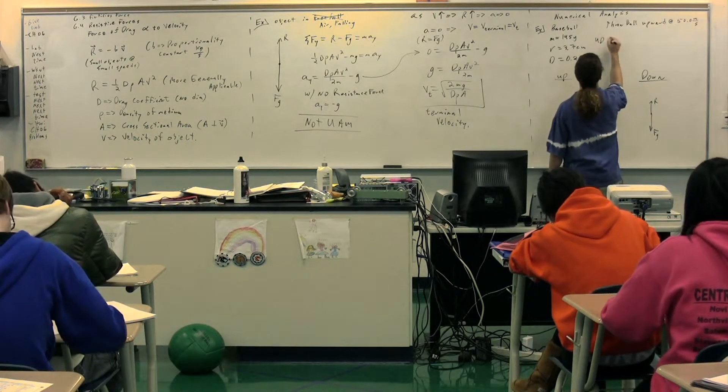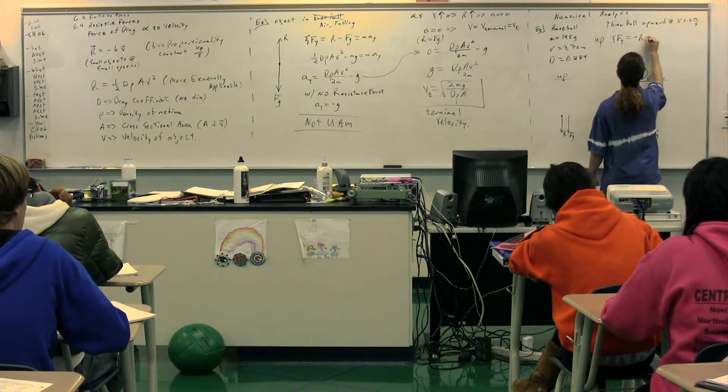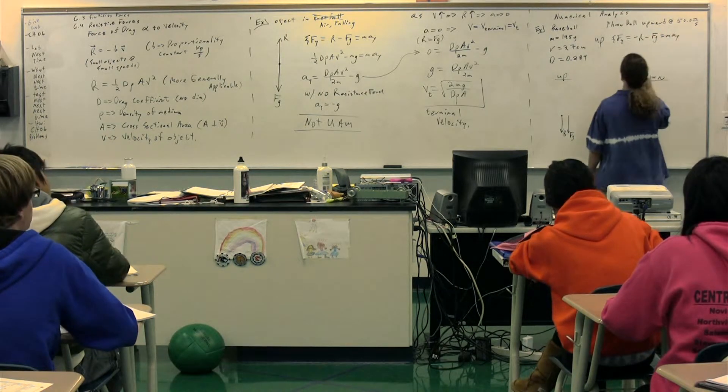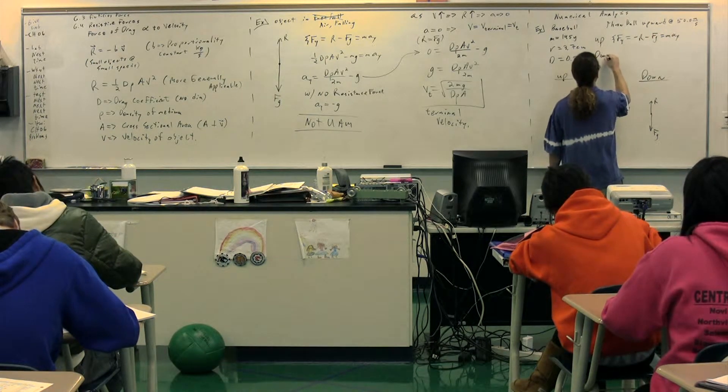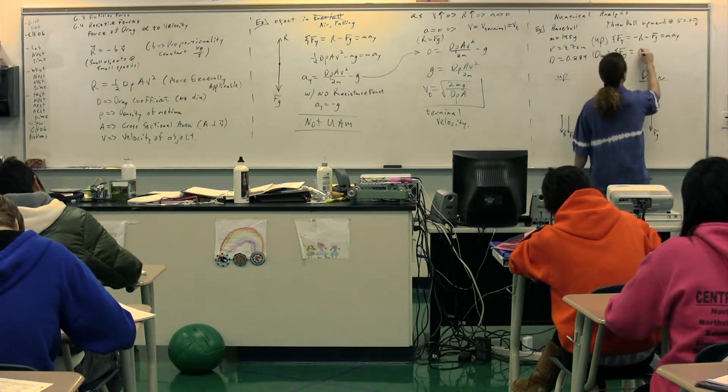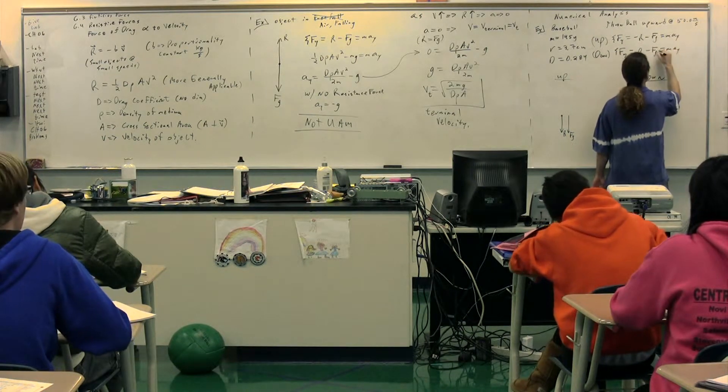The free body diagram actually changes depending on whether the object is moving up or down because the direction of the velocity changes. Therefore, the resistance force changes direction. So, if on the way up we sum the forces, we get the net force in the y direction equals the negative resistance force minus the force of gravity. That's equal to the mass times the acceleration in the y direction. On the way down, however, the net force in the y direction equals the resistance force, which is positive, minus the force of gravity, which equals mass times acceleration in the y direction.